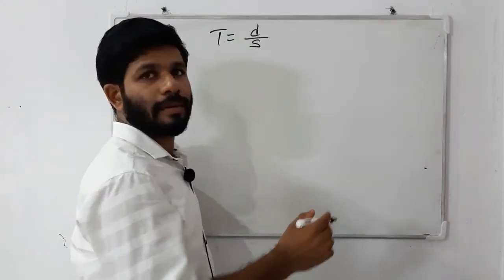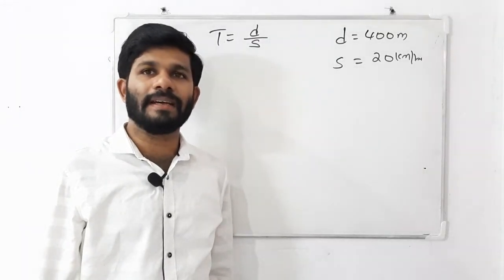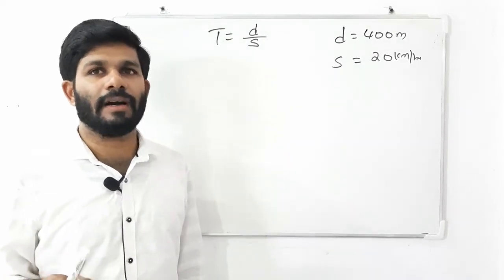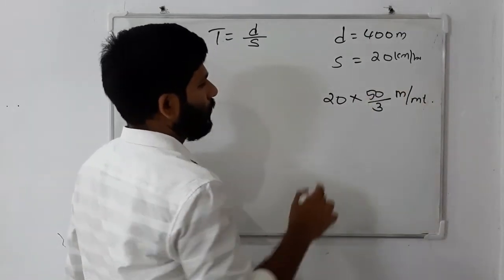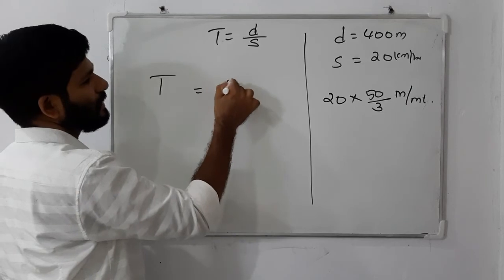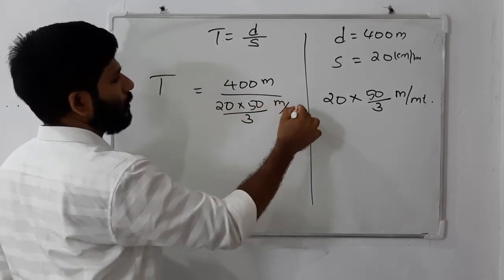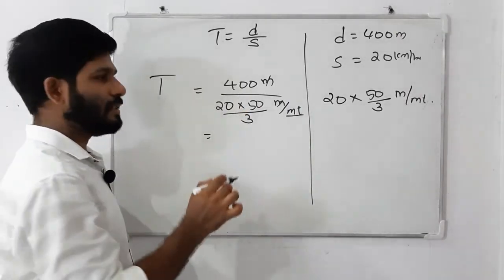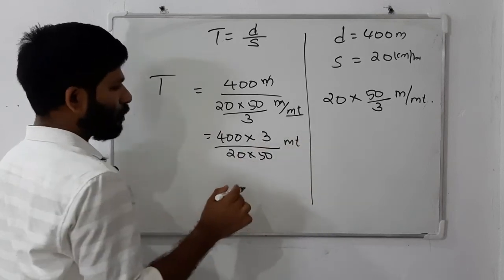The time is distance divided by speed. Distance equals 400 meters. Speed is 20 km per hour. But you have to give the answer in minutes. Speed of 20 km per hour is converted — it's about 50 meters per minute. Now, time equals distance divided by speed: distance is 400 meters, speed is 300 meters per minute — cancelling, the result is approximately 2 minutes.